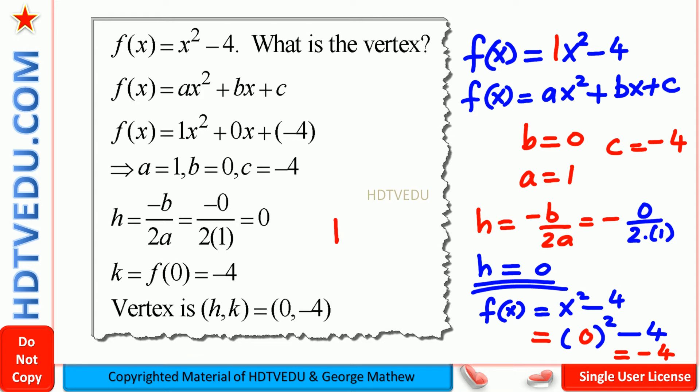So when we substitute x equals 0, we get negative 4. So what is h? h equals 0. And when we substitute x equals 0, we get k. And what is k? k is negative 4. So 0, negative 4.